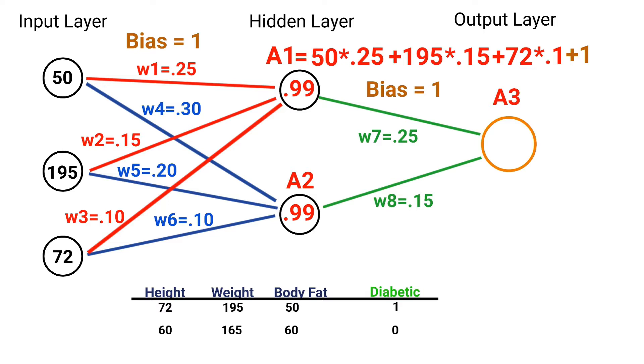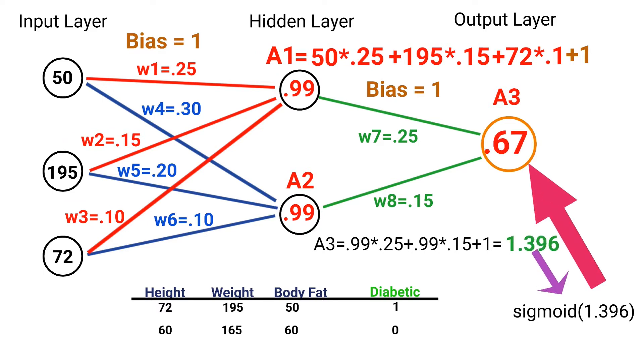Now, we're going to calculate our output neuron, or A3, the same way we calculate our other hidden neurons. Now, I'll go ahead and put the equation up on the screen here, and as you can see, it's simply our A1, activation value of 0.99, times W7, our first weight in our output layer, of 0.25, plus 0.99, which is the activation of A2, times W8, or 0.15, plus our bias of 1. And that equals a value of 1.396. We pass that to our sigmoid activation for a final output value of 0.67.